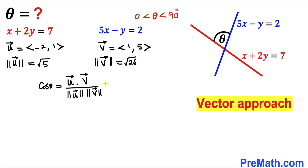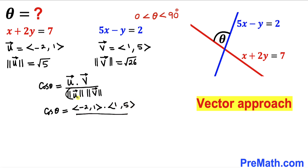Now we are going to fill in the blanks in this formula. So cosine of angle theta is going to be equal to the dot product of vectors negative 2, comma 1 and 1, comma 5, all over the square root of 5 times the square root of 26 at the denominator.